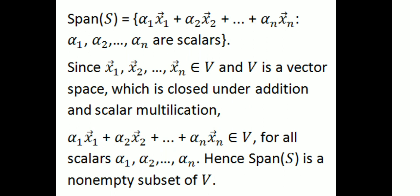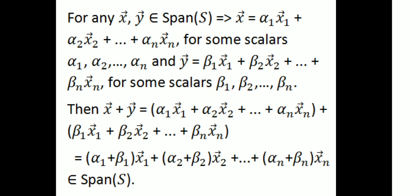For any vector x in span(S), x = α₁x₁ + α₂x₂ + ... + αₙxₙ for some scalars α₁, α₂, ..., αₙ. For any vector y in span(S), y = β₁x₁ + β₂x₂ + ... + βₙxₙ for some scalars β₁, β₂, ..., βₙ. Then x + y = (α₁+β₁)x₁ + (α₂+β₂)x₂ + ... + (αₙ+βₙ)xₙ, which belongs to span(S), since the αᵢ+βᵢ are scalars.